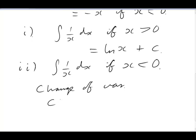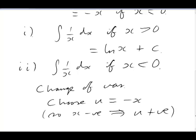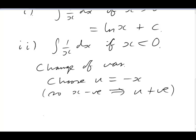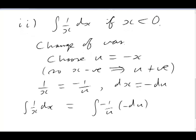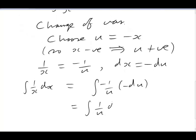I'll call the new variable u. I'm going to choose u equal to negative x. So x negative implies that u is positive. Then 1 over x becomes negative 1 over u. And dx becomes negative du. So our integral 1 over x dx becomes the integral negative 1 over u times negative du. And notice now we have two negative signs.